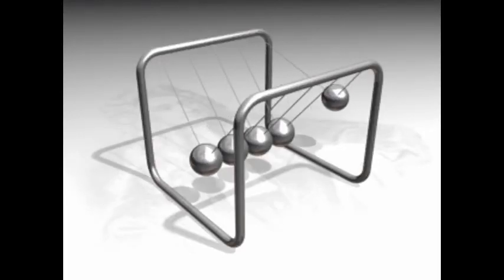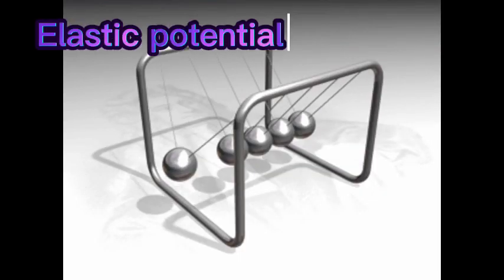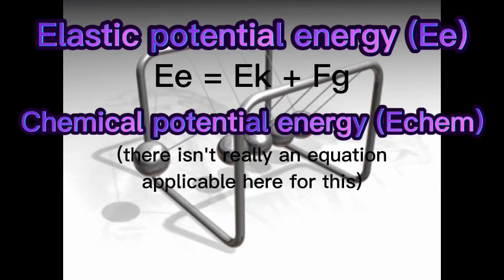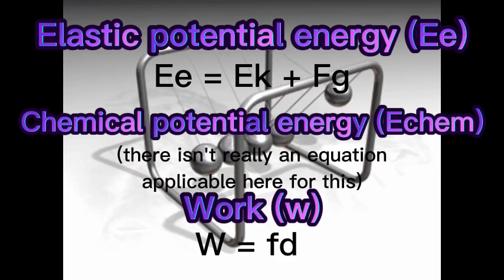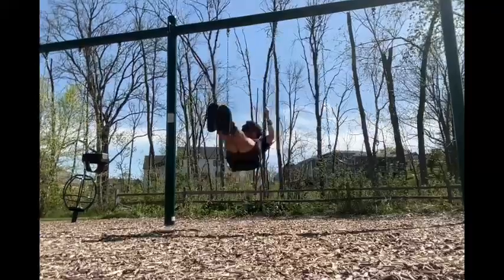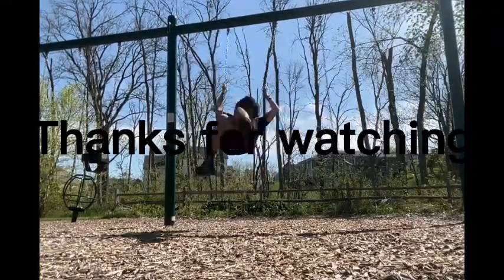There aren't examples for all of them right now, but the other types of energy are elastic potential energy, chemical potential energy, and there's also work — though that's not exactly a specific type. It's just here are all the energies that are acting on it in one. Thanks for watching and have a great year.